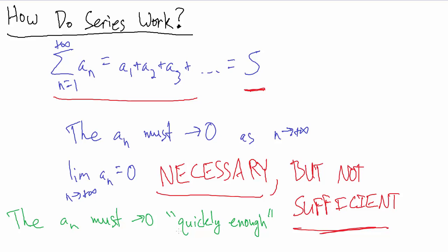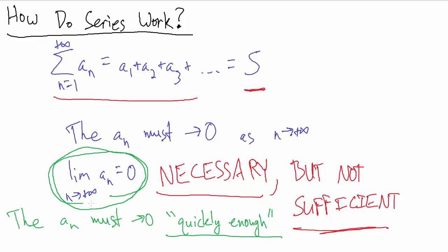What does it mean to go to 0 quickly enough? Well, that's the part that's sort of hard to describe, hard to quantify. But there are a few different types of series, and in future videos we'll talk about these different types and how to analyze whether they converge or diverge. For now, just remember this is a necessary condition — if you know this is true and that's all you know, you can't say whether the series converges or diverges. This also leads into something called the nth term test, which we'll talk about in a later video.